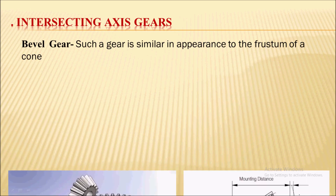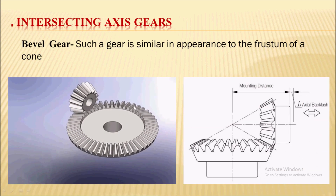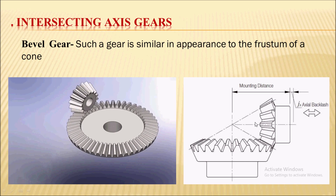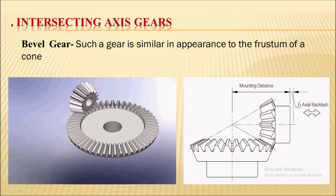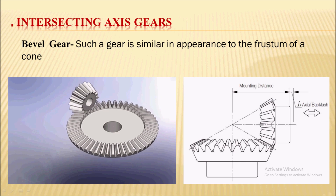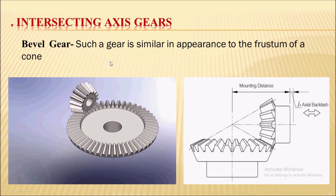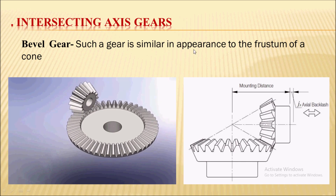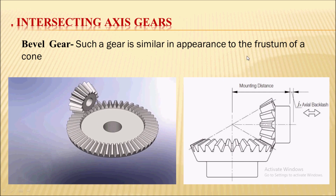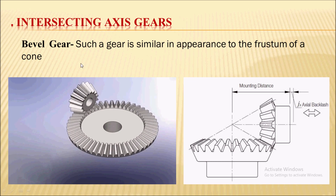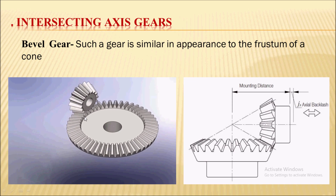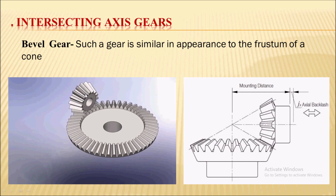Now let's move on to the intersecting axis gear — the bevel gear. Two intersecting axis shafts, usually at 90 degrees, are connected by bevel gear. You can see the animation of a bevel gear. The appearance of a bevel gear is similar to the frustum of a cone — they are conical in shape — and the width of the gear decreases from one point to another.